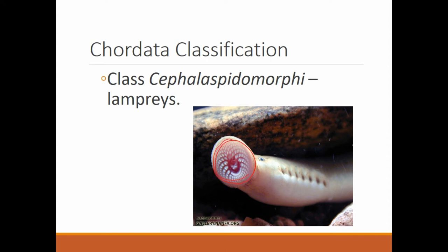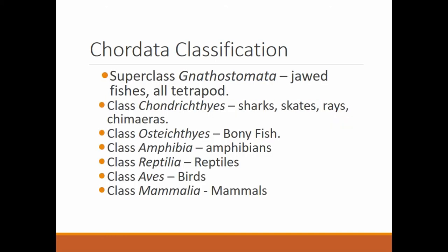The lamprey uses its oral sucker to attach to other fish, and then uses its rows of teeth to eat away at the tissue of the fish it is on. You can see the gill slits and the eyeball, so it does have bilateral symmetry, and inside is a nerve cord supported by vertebrae. Here are the classes under superclass Gnathostomata — this includes all the jawed fishes and all tetrapods. Tetrapods are organisms with four appendages.